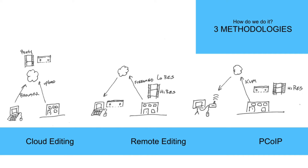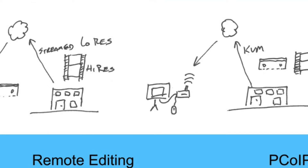So we have three different paradigms. We've got cloud editing, where everything is in the cloud — and when I say cloud, I mean Amazon Web Services, Azure, or some kind of third-party cloud platform. We also have remote editing, where all the media is back at the mothership, at your home base, at your employer's building, and you're editing remote. And then we have more acronyms — because we love acronyms in our industry — and that's PC over IP. Those are people who have used TeamViewer and tools like that. I'll go over the differences in a minute.